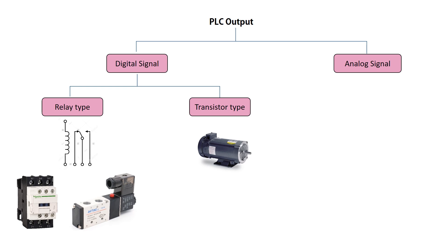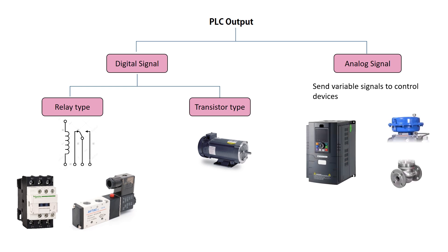PLC analog outputs are used to send variable signals to control devices that require a range of values rather than simple on-off states. These signals can be either voltage or current and are used to control devices that need precise adjustments. Examples of PLC analog output devices are variable frequency drives and control valves.